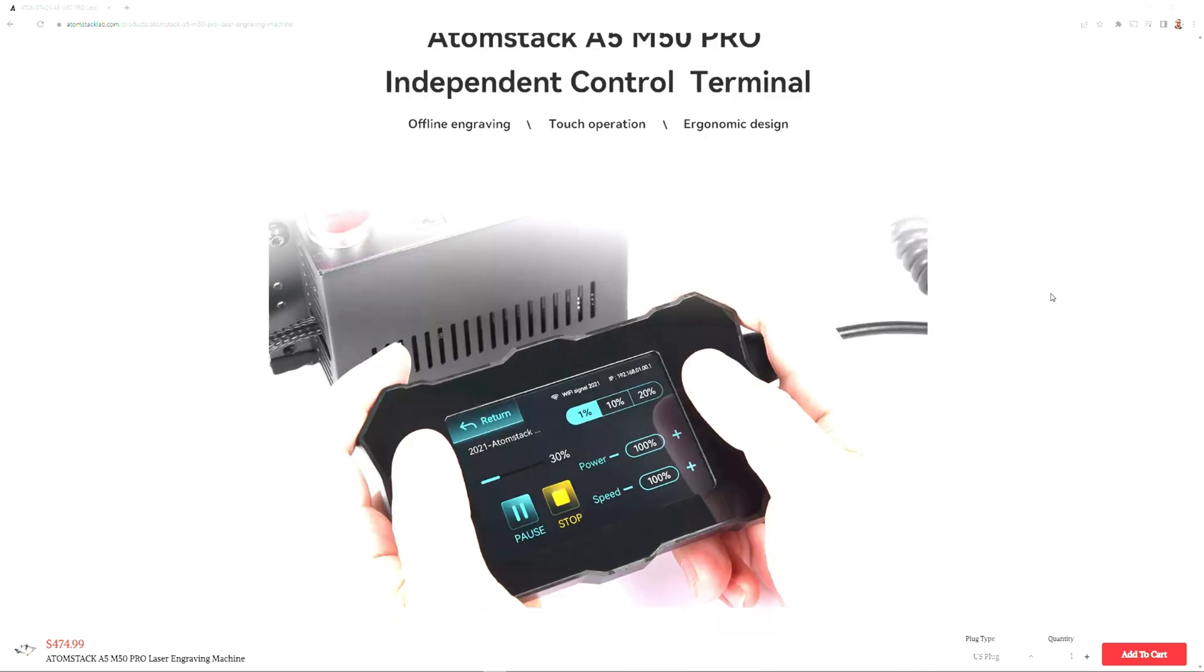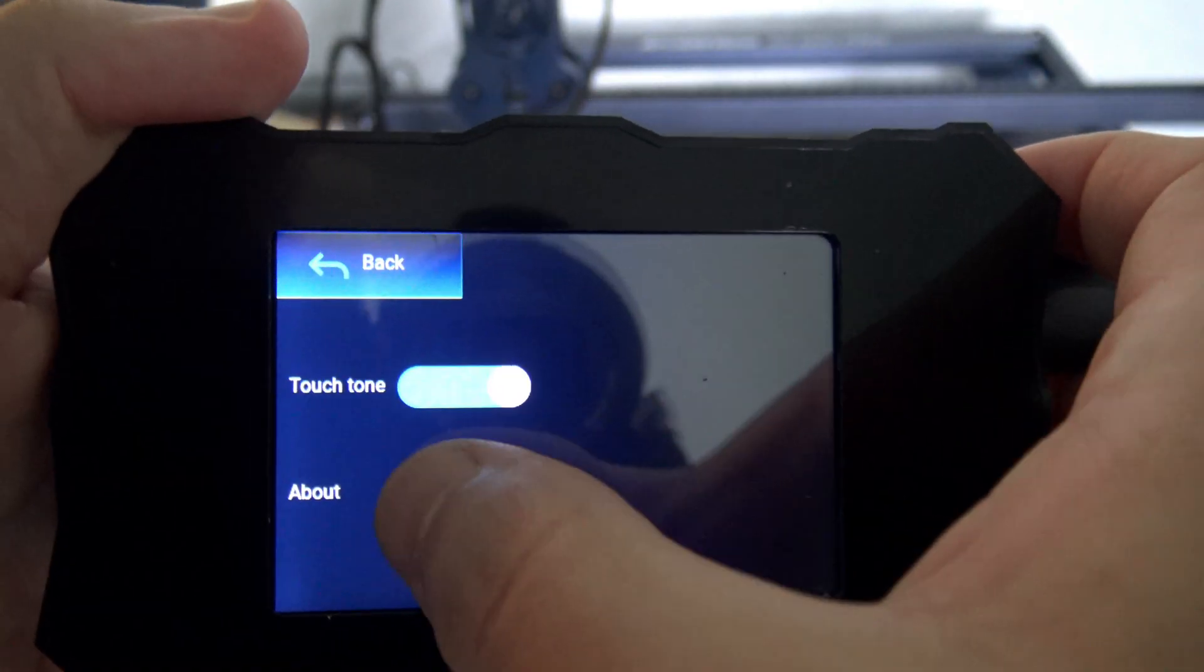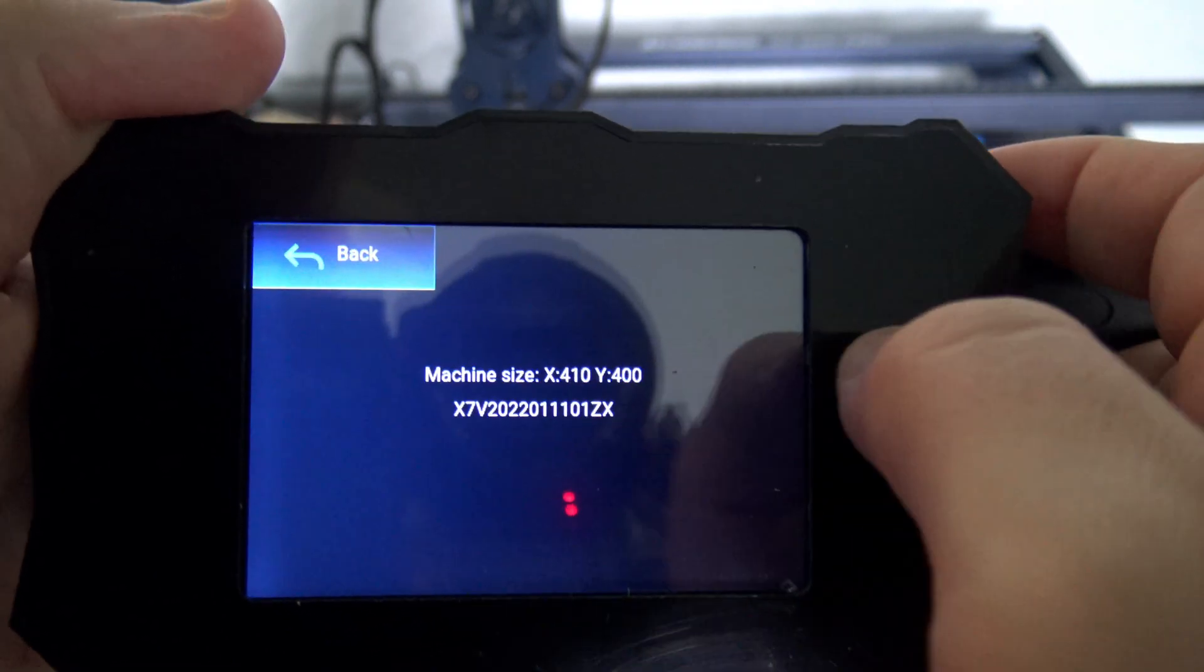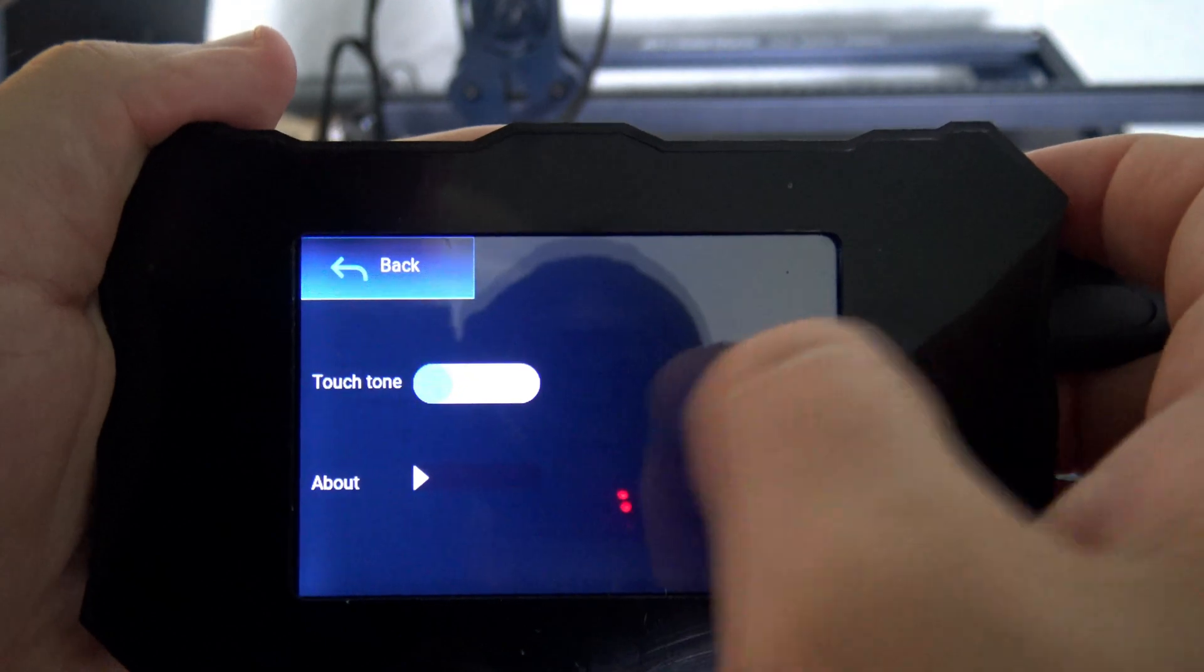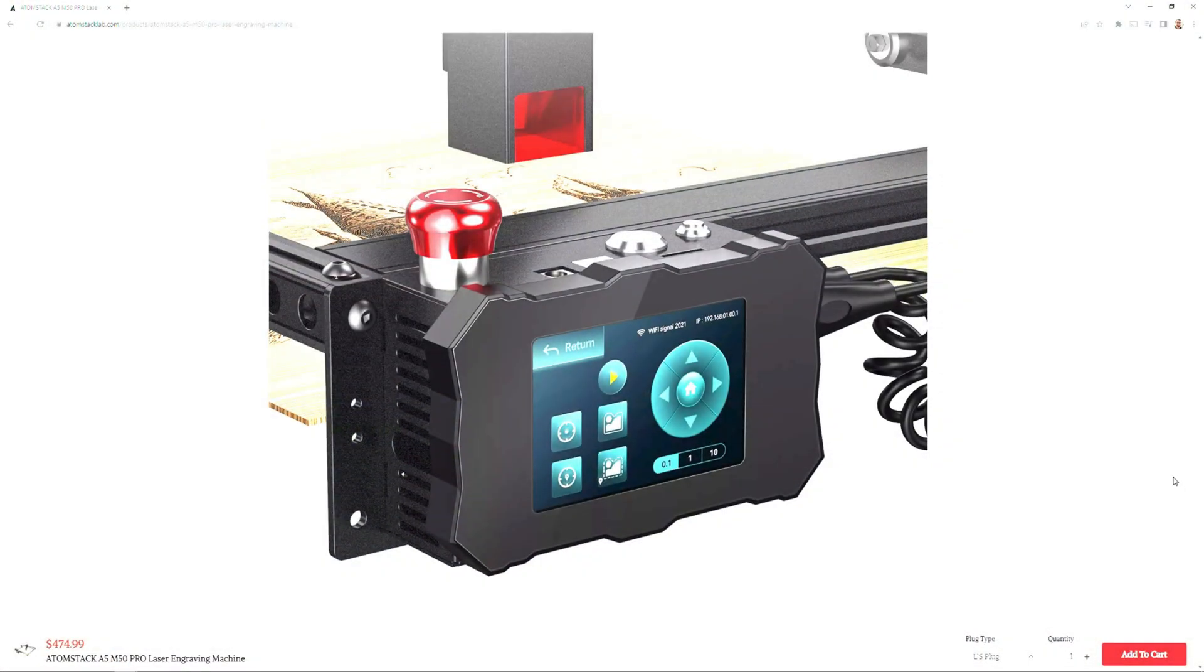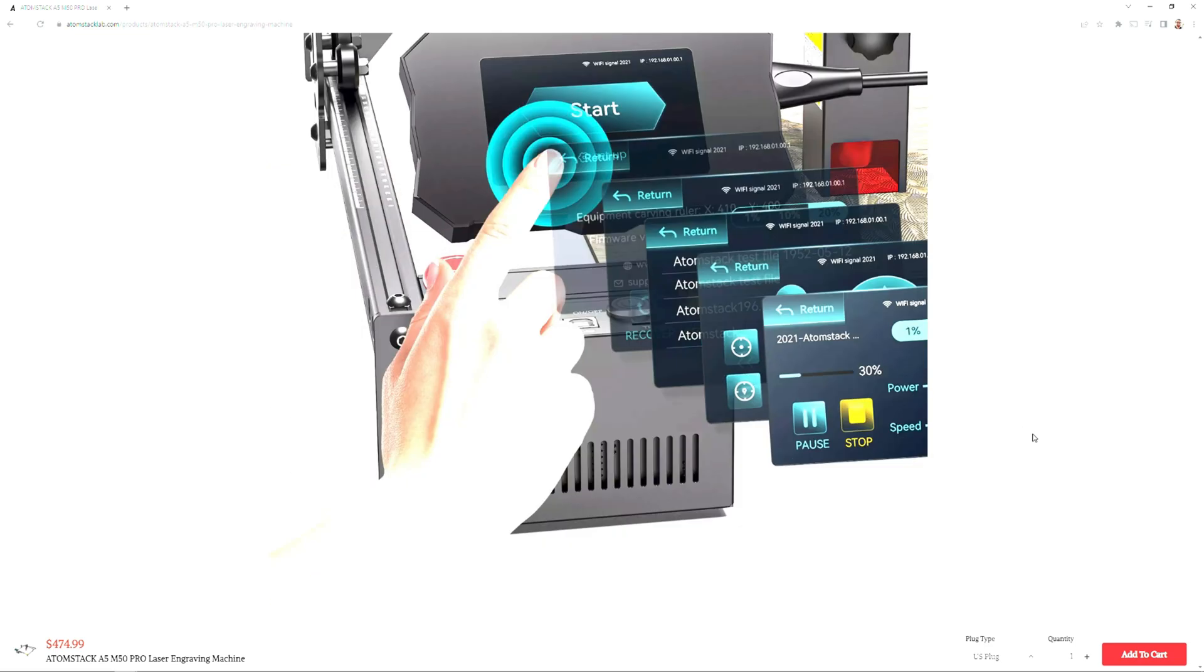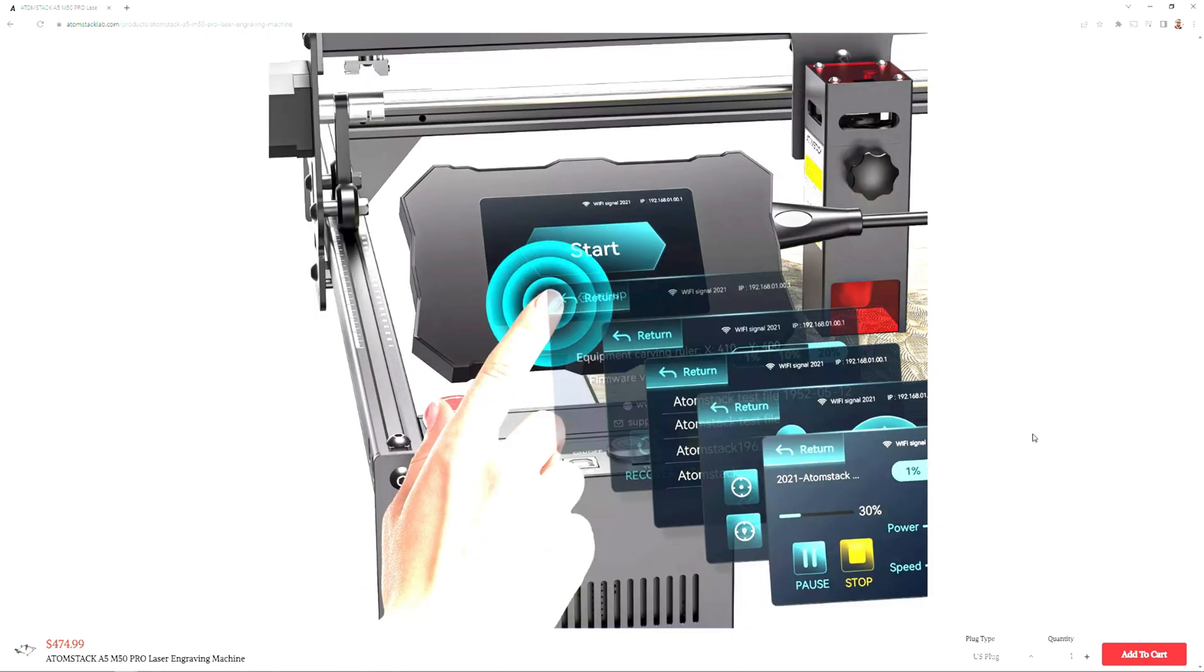There is one more problem with the marketing on the website. Every image of the A5 M50 Pro's control screen shows that it's connected to WiFi with an IP address. However, this laser does not have WiFi capabilities, nor do they sell an upgrade that gives it WiFi capabilities. The only option in their menu is to toggle whether touch sounds are enabled. They seem to reuse a lot of the same marketing images between the various A5 lasers, so maybe there's another model that I couldn't find that has WiFi, but the A5 M50 Pro does not.